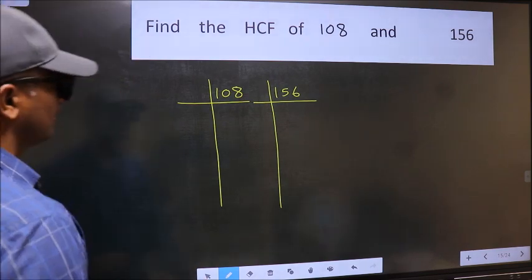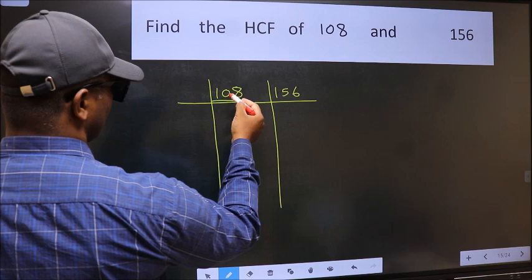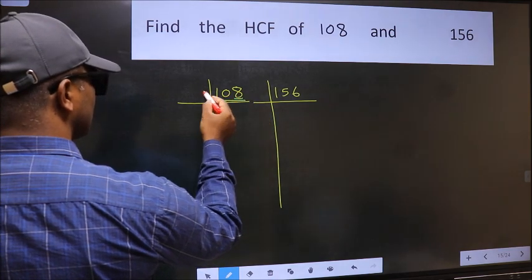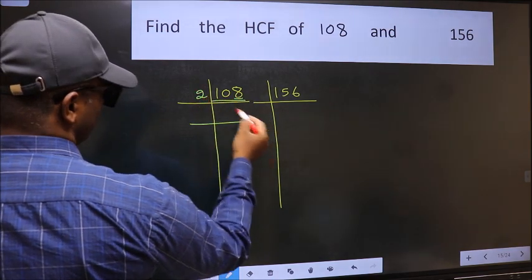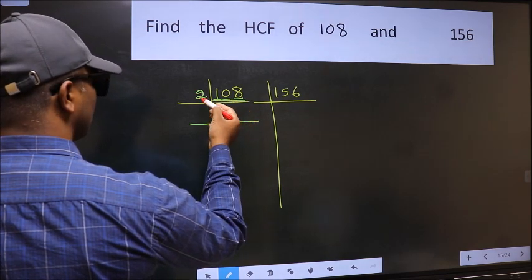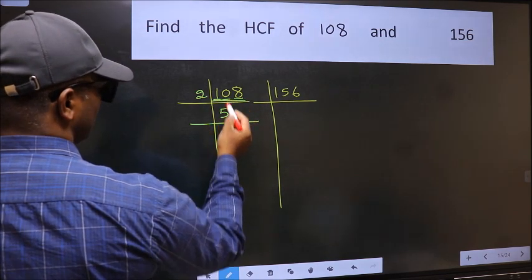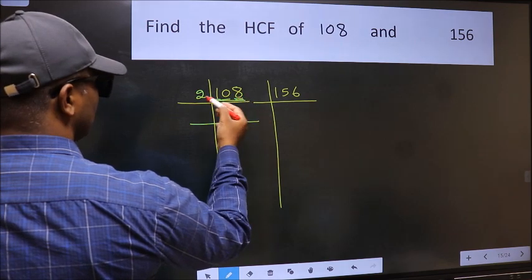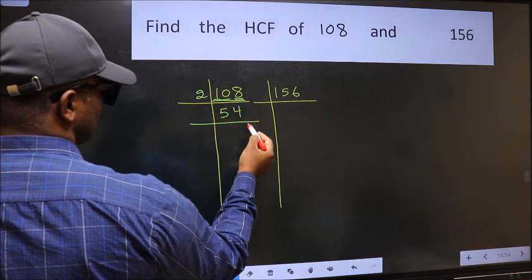In this number, last digit 8 is even, so take 2. First number 1 is smaller than 2, so 2 into 10. When do we get 10 in 2 table? 2 times 5 is 10. The other number 8, when do we get 8 in 2 table? 2 times 4 is 8.